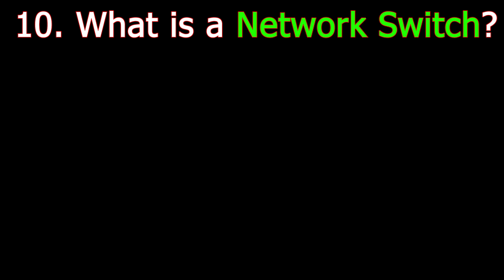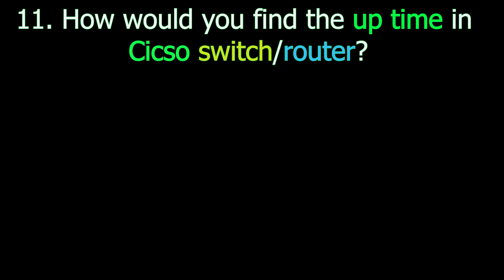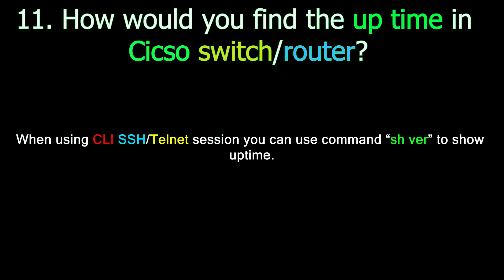Question number ten: What is a network switch? A network switch is a device that creates a network in which multiple devices are connected and share data. This is accomplished by receiving, processing, and forwarding data in the form of data packets. Question number eleven: How would you find the uptime in a Cisco switch or router? When using a CLI SSH or telnet session, you can use the command 'sh ver' to show uptime.